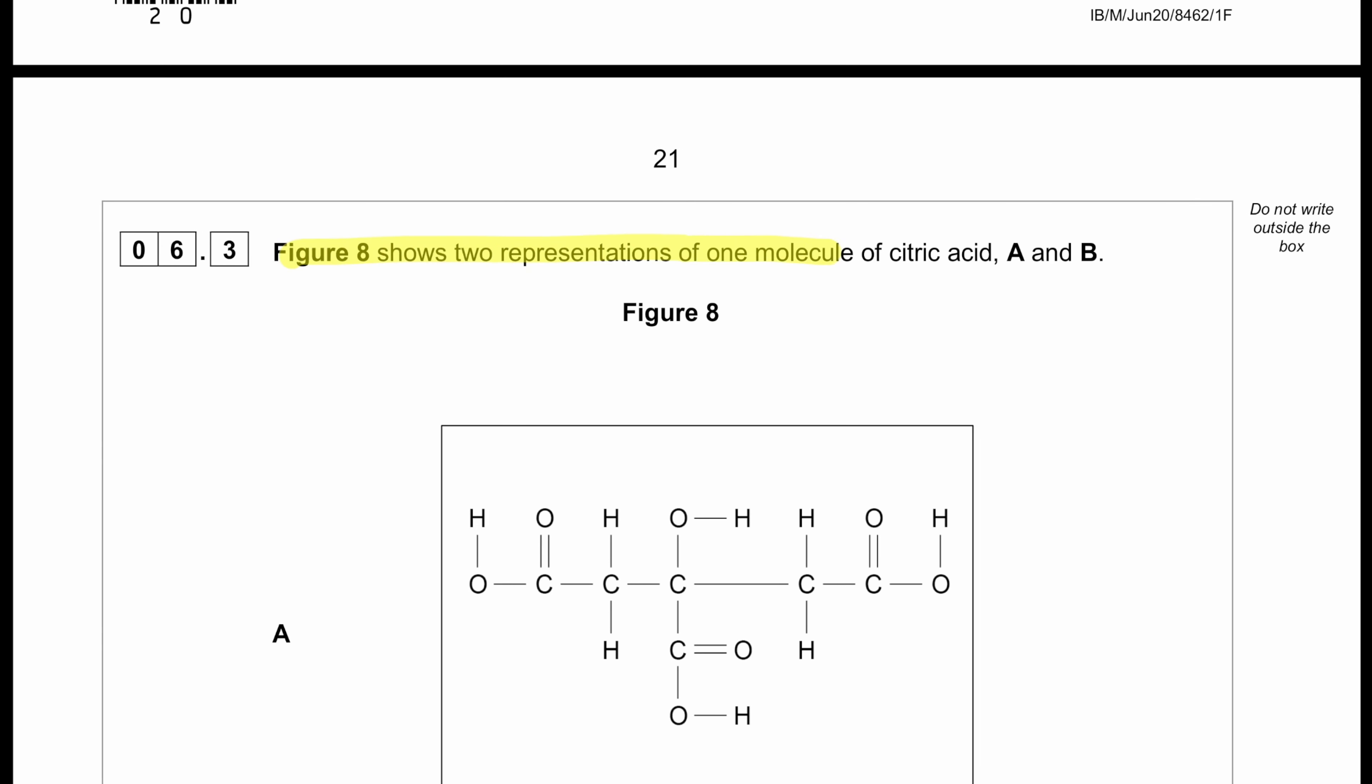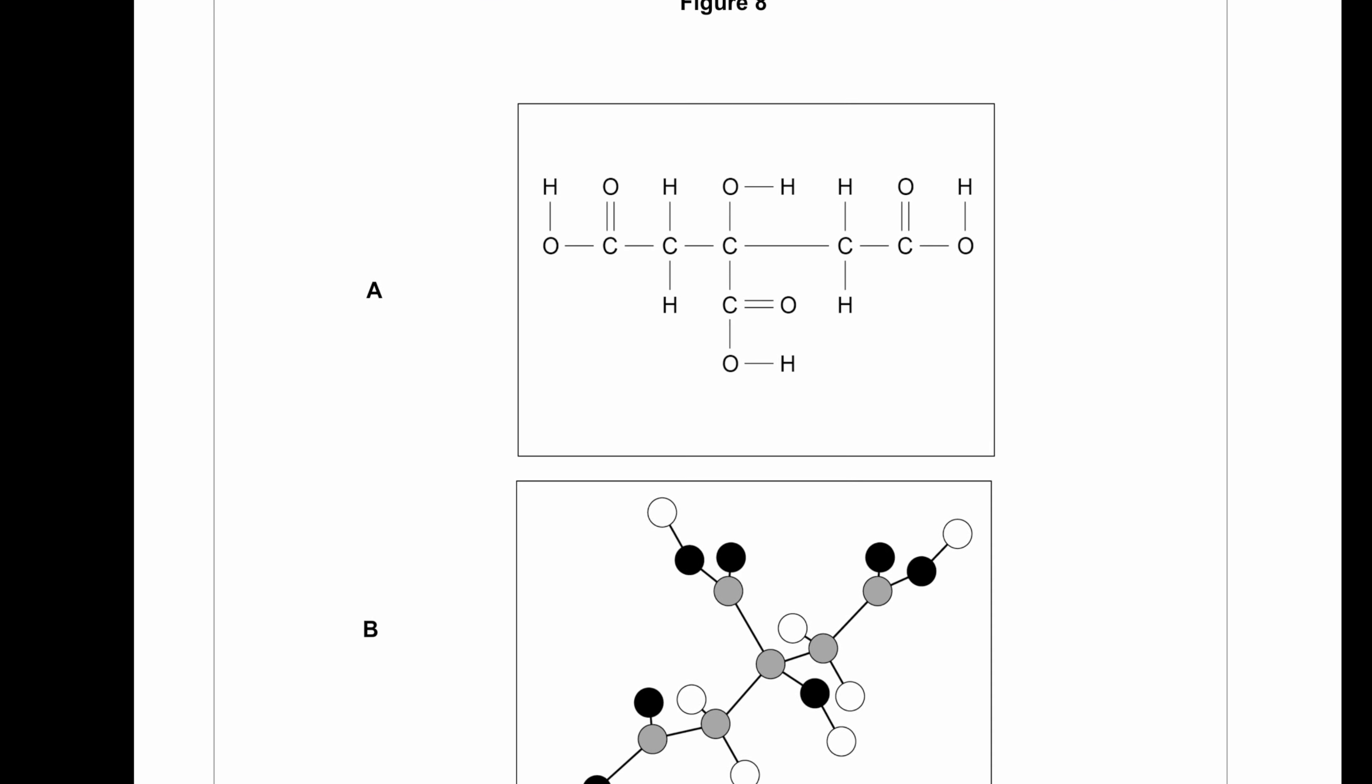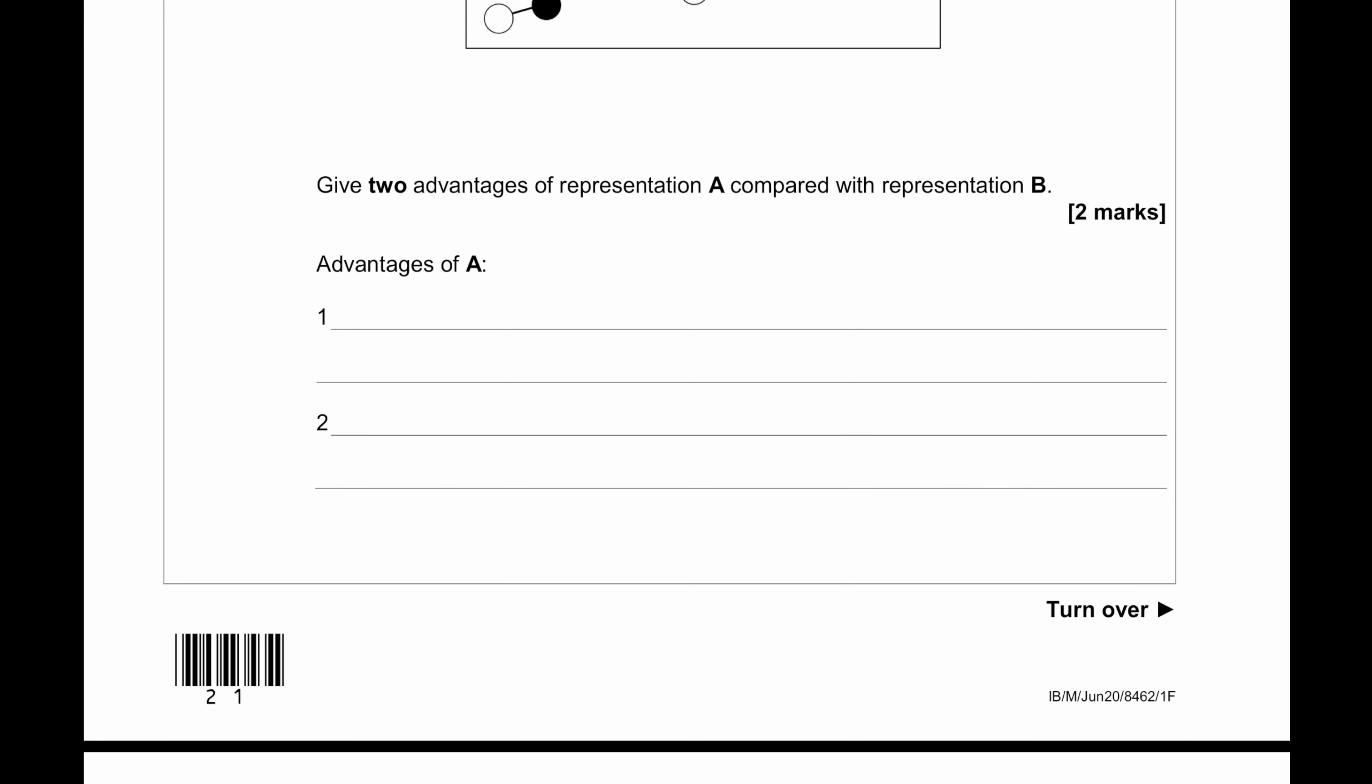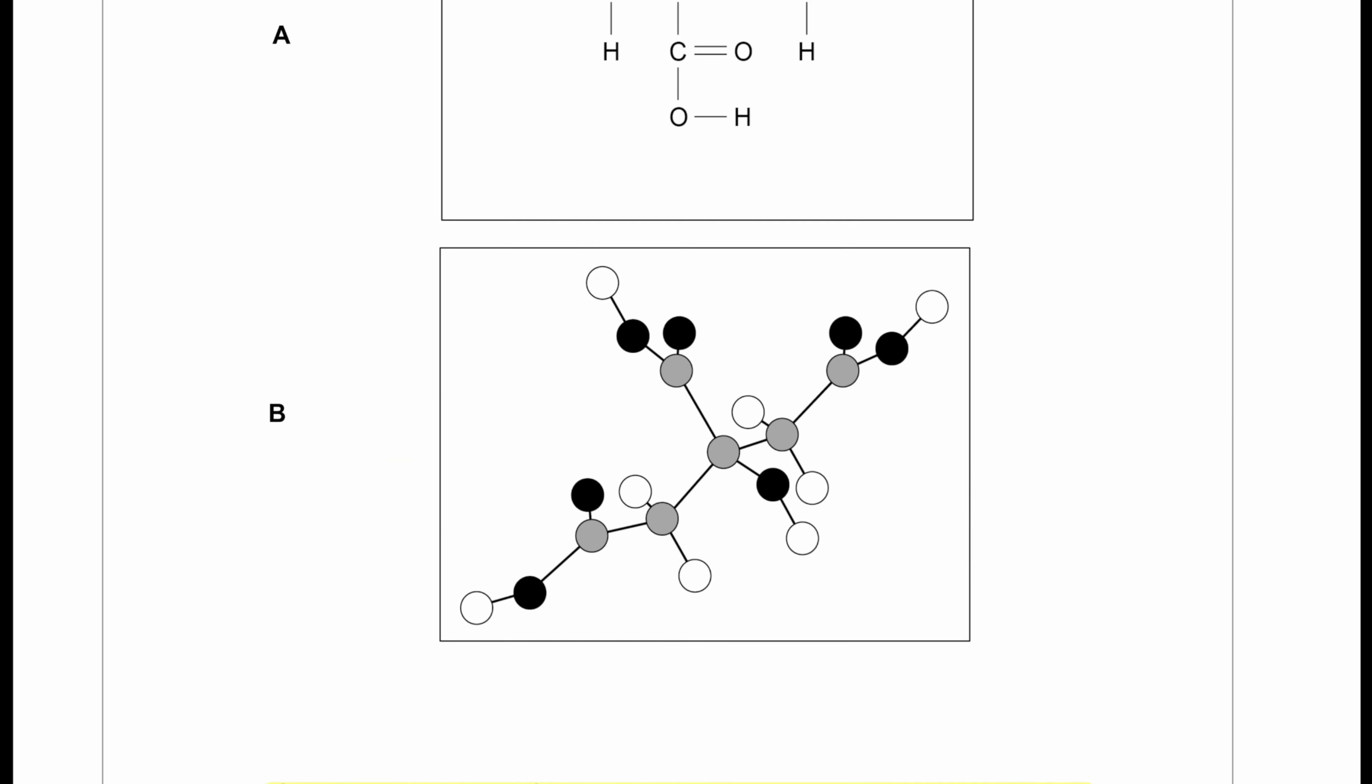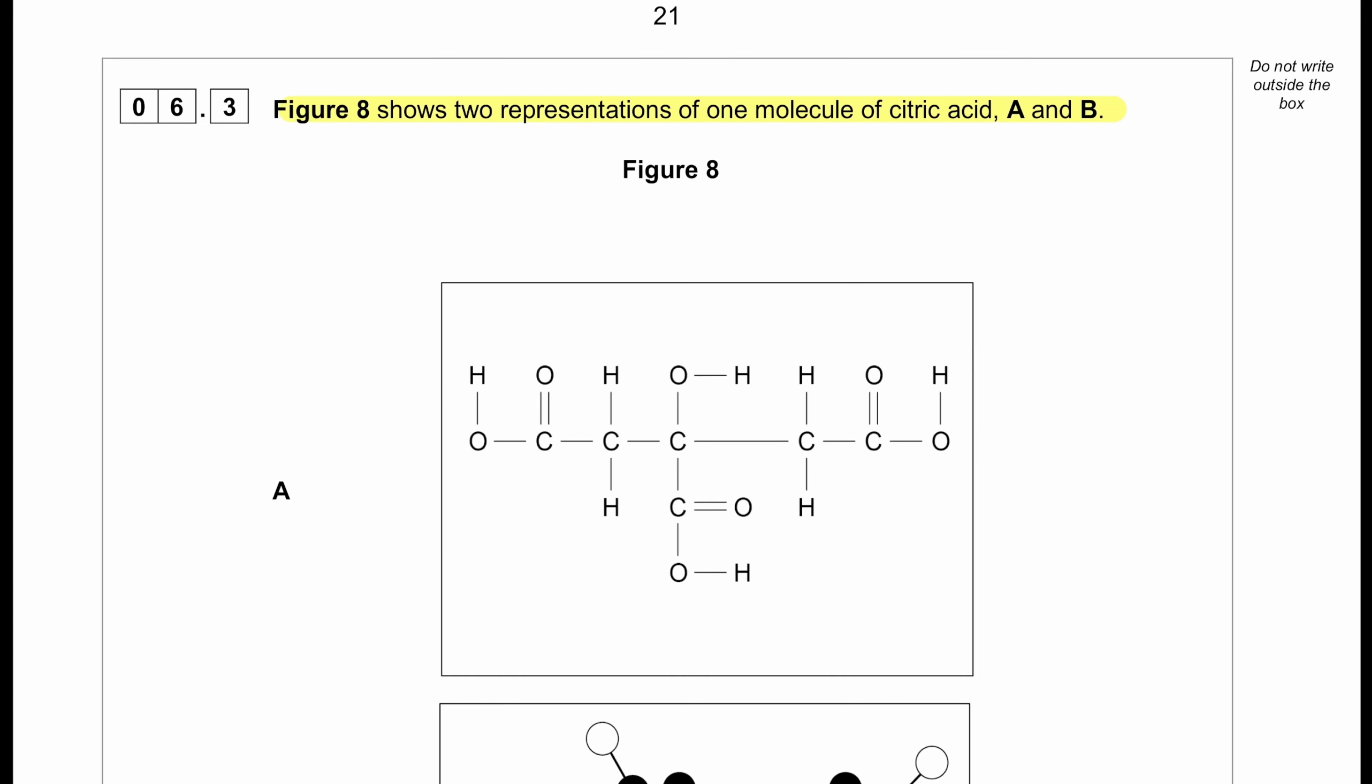Figure 8 shows two representations of one molecule of citric acid, A and B. Give two advantages of presentation A compared with presentation B. So in presentation A, all the bonds, even double bonds and single bonds, are nicely understood. In presentation A, it is also shown which elements are binding with which other elements.